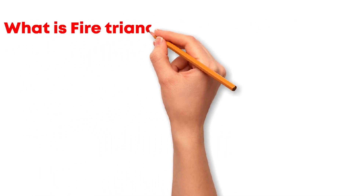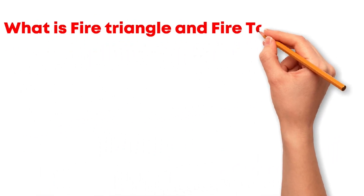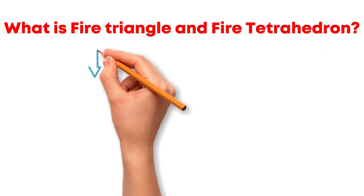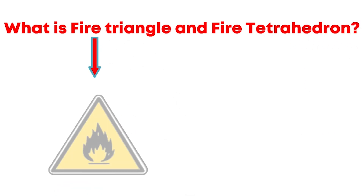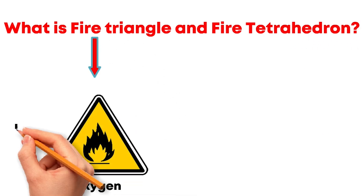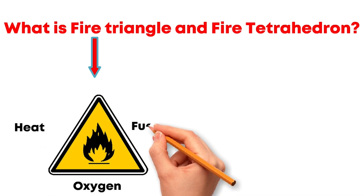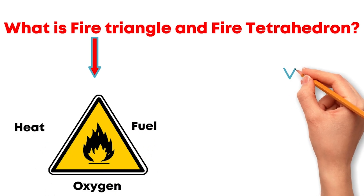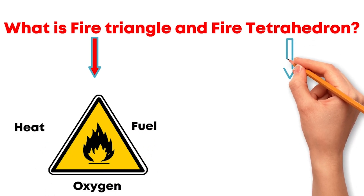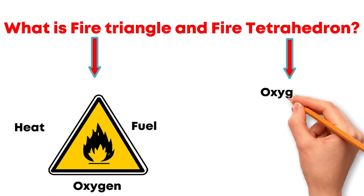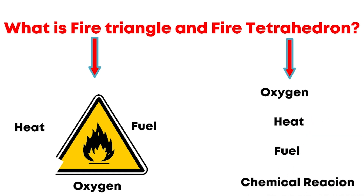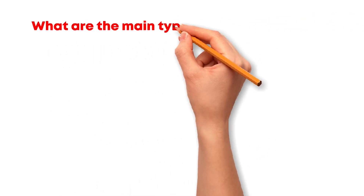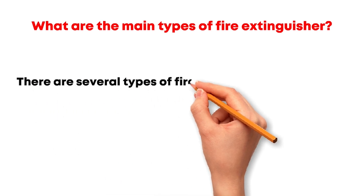Now let's discuss the fire triangle and fire tetrahedron. The fire triangle is a diagram representing three elements that create a fire: oxygen, heat, and fuel. The fire tetrahedron, on the other hand, includes oxygen, heat, fuel, and a chemical chain reaction.